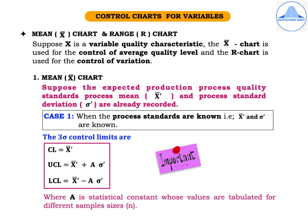For the mean or x-bar chart, suppose the expected process quality standards — that is, the process mean denoted by x-bar-dash and the process standard deviation sigma-dash — are already recorded. This is Case 1, when the process standards are known. The three-sigma control limits are: CL = x-bar-dash, UCL = x-bar-dash + A·sigma-dash, LCL = x-bar-dash − A·sigma-dash, where A is a statistical constant whose values are tabulated for different sample sizes n.